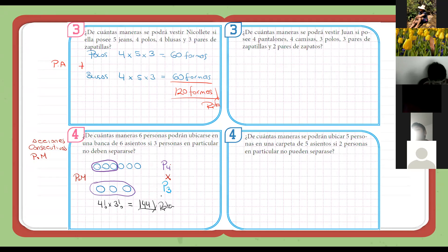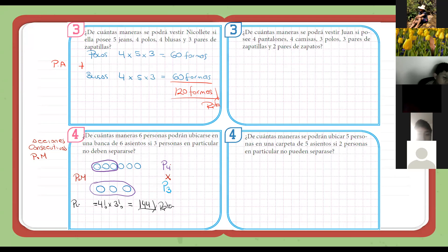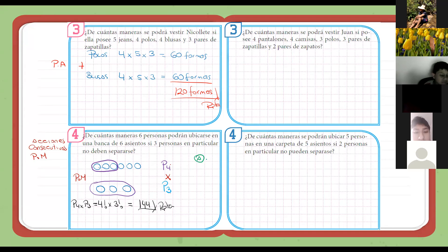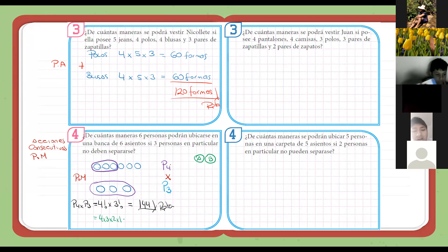Profesor, ¿por qué ciento cuarenta y cuatro? La permutación de cuatro es tomando a todos ellos como si fueran uno solo, una sola persona. Acá voy a poner permutación de cuatro por la permutación de tres. El signo de exclamación es factorial. Todavía no están tan familiarizados con el factorial. El factorial es cuatro por tres por dos por uno, y acá sería por tres por dos por uno. Y eso nos da esta respuesta.